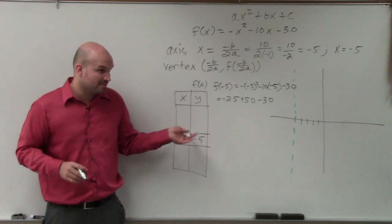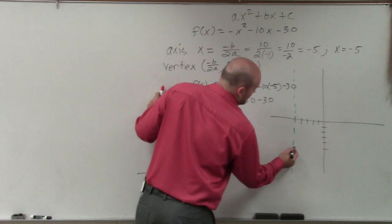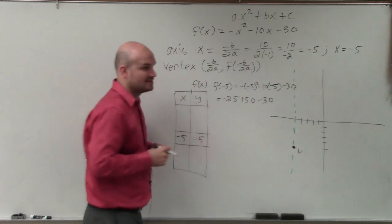Negative 5 comma negative 5. So now, this coordinate point, negative 5, negative 5, that is now my vertex.